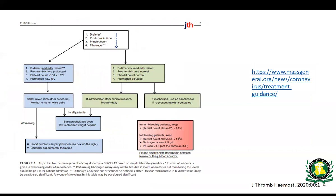This has led to institution of protocols and guidelines to start these patients on anticoagulation. There is variation between institutions, but strong consideration is being given to anticoagulating patients admitted with COVID. For those not considered very high risk, there is a fairly strong recommendation to start prophylactic-dose low molecular weight heparin. For those at higher risk based on D-dimer levels, there is a recommendation to strongly consider starting therapeutic anticoagulation using heparin or other anticoagulants.